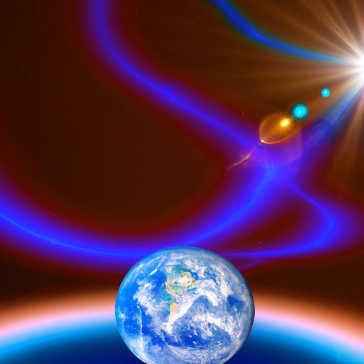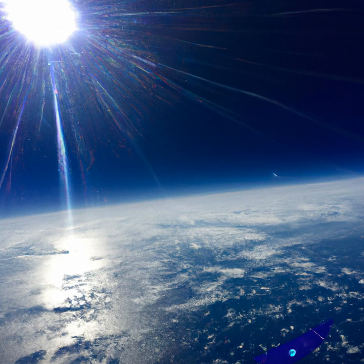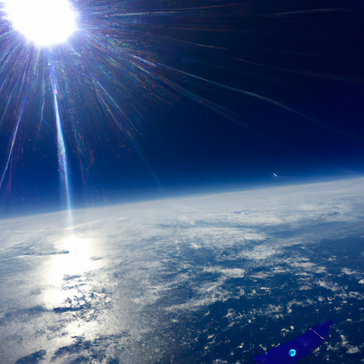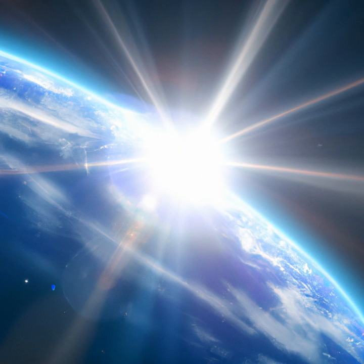The physics of the Earth's orbit is quite complex, but we can simplify it by understanding that the Earth is constantly moving in a circular motion around the Sun. This motion is known as the Earth's orbital velocity. The Earth's orbital velocity is determined by the gravitational pull of the Sun and the amount of time it takes for the Earth to make one complete orbit around the Sun.